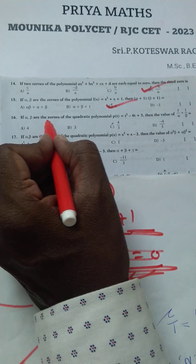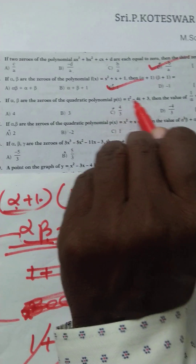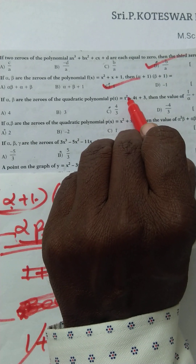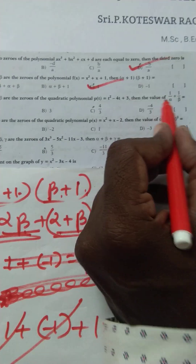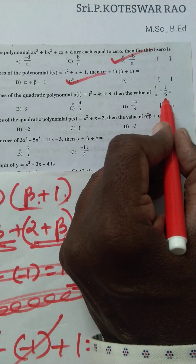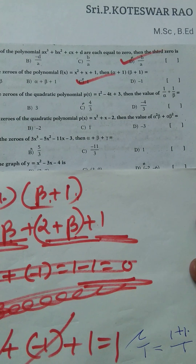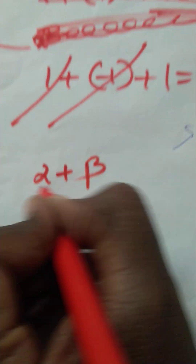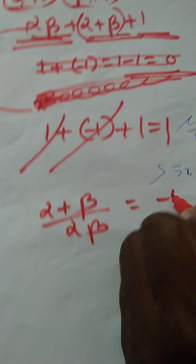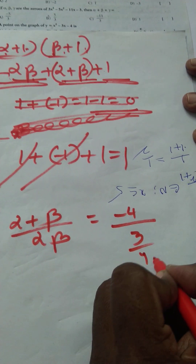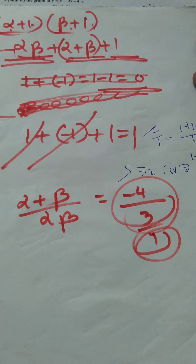If alpha, beta are the zeros of the quadratic polynomial p(t) = t² − 4t + 3, then the value of 1/alpha + 1/beta. This equals alpha plus beta over alpha·beta, which is minus 4 by 3. Option C is the right option.